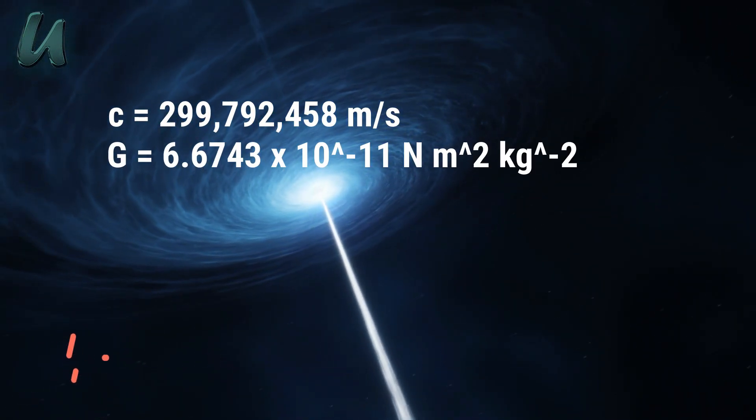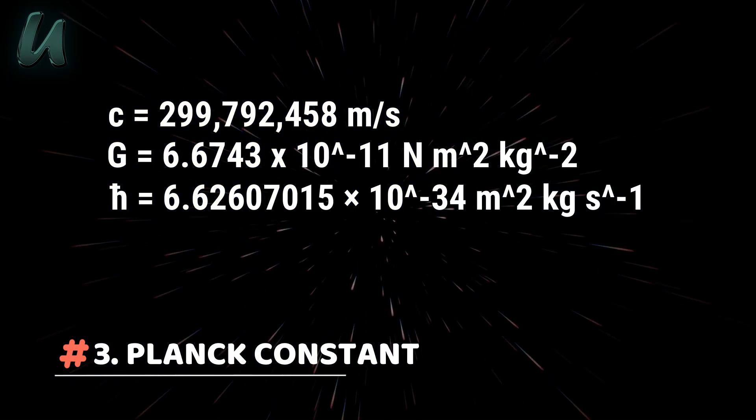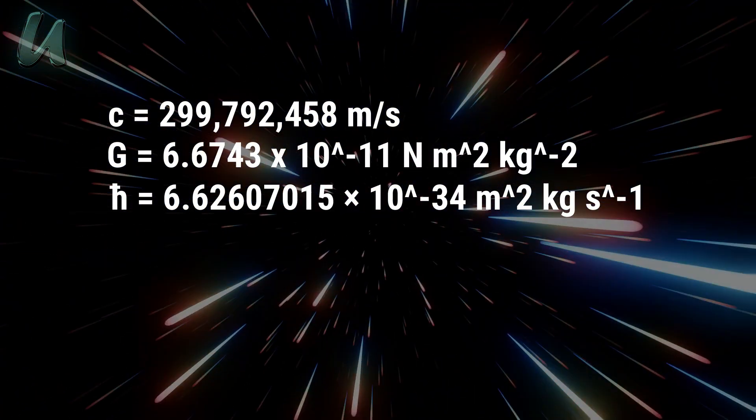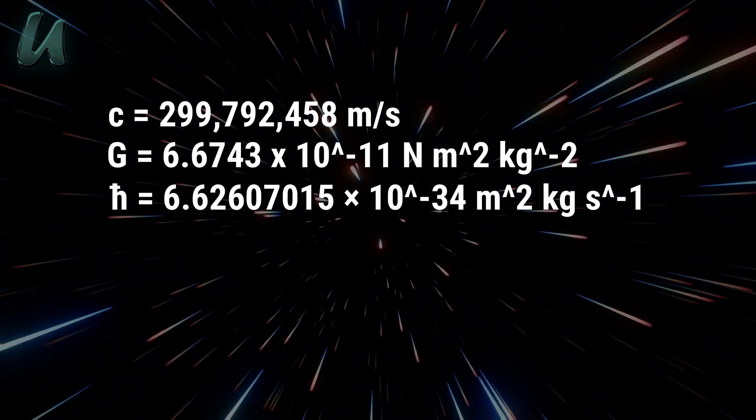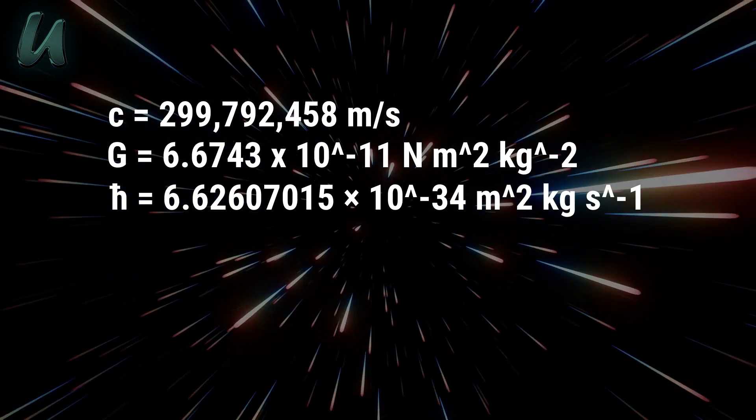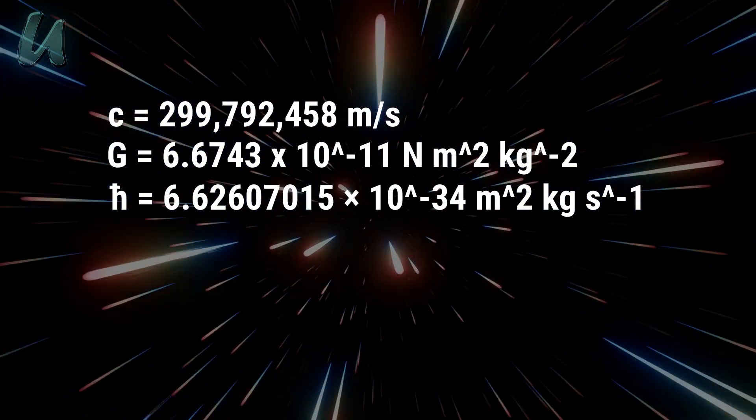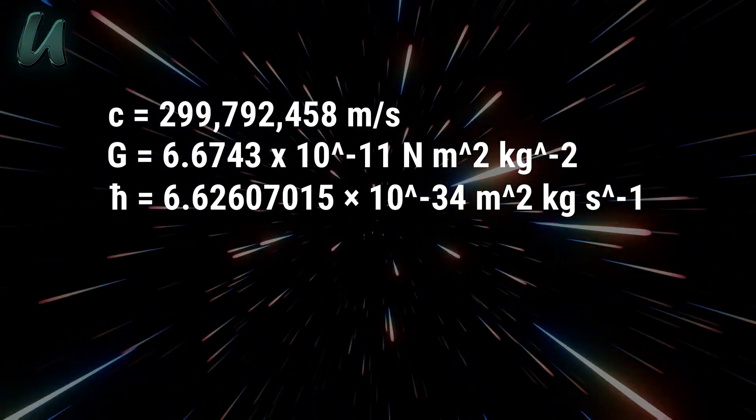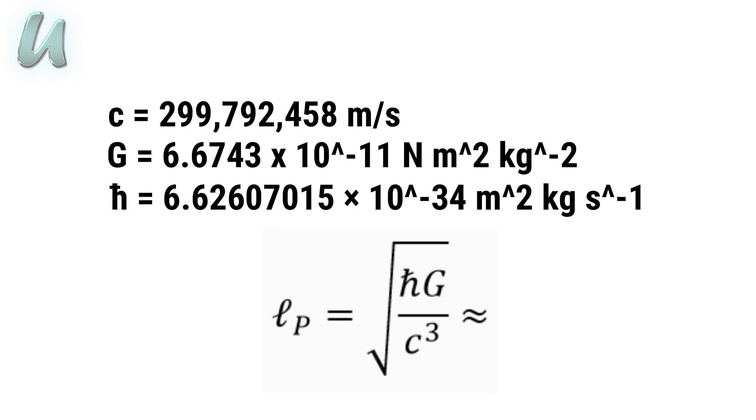Also there is the gravitational constant. And the third one is the Planck constant. This constant relates a photon's energy to its frequency. All of these constants have units associated with them. And yes, it is possible to combine these constants together so that most of their units will cancel out. And all we are left with is the length which is the Planck length.